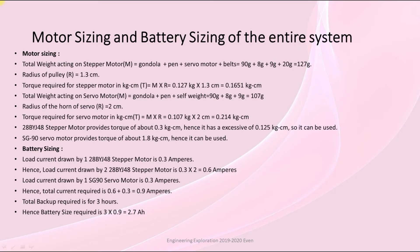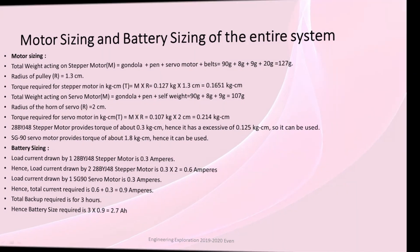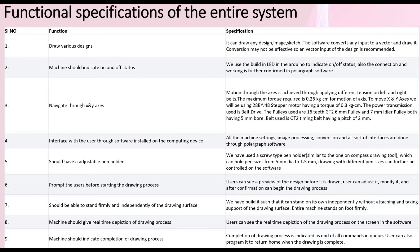Functional specifications of the entire system. These are: draw various designs, machine should indicate on and off status, navigate through X and Y axis, interface with the user through the software installed on the computing device, should have adjustable pen holder, prompt the users before starting the drawing process, should be able to stand firmly and independently of the drawing surface, machine should give real-time depiction of the drawing process, machine should indicate completion of the drawing process.